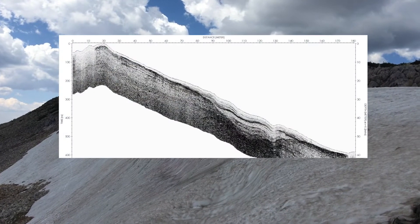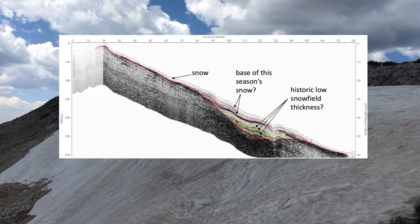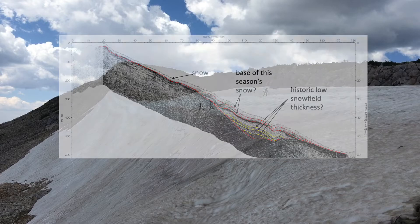You can see the type of image we get from measuring a permanent snowfield using GPR. This radargram can be interpreted in terms of current snow year, total snow thickness, and reflectors that indicate possible minimum snowfield extents. Below the snow layer, you can see chaotic diffraction patterns that are due to the boulder and scree field.